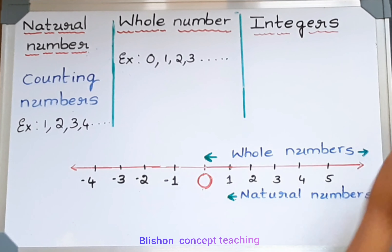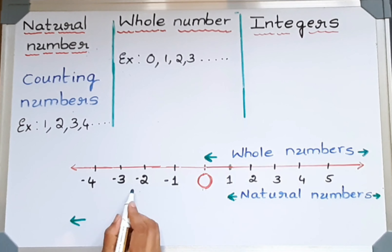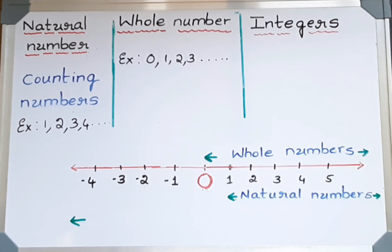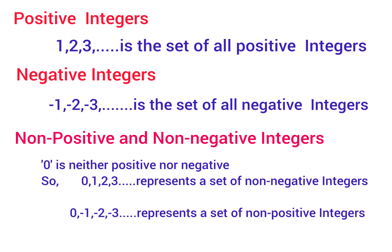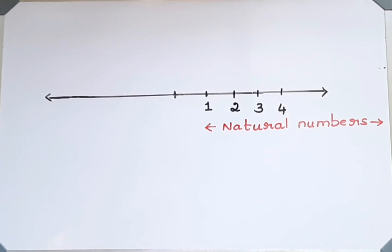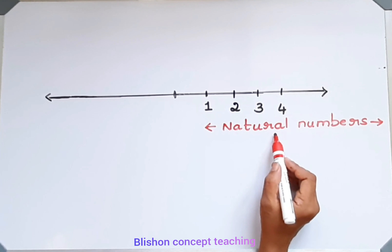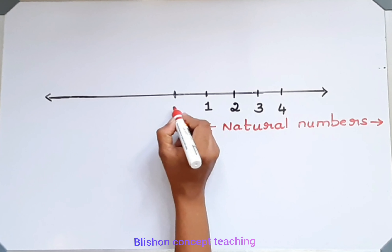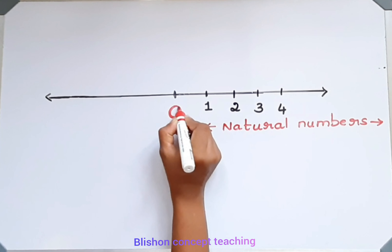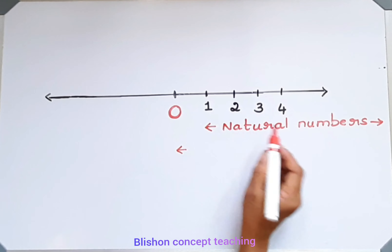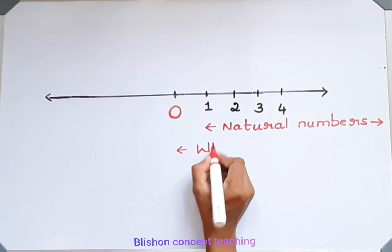That is, a set of negative numbers, zero, and the natural numbers will make integers. You know that one, two, three, four, and so on are called natural numbers. Then, if I write zero, from zero and the natural numbers it will make whole numbers.